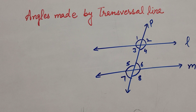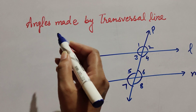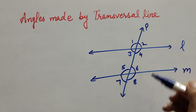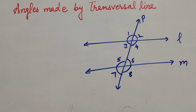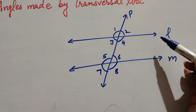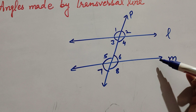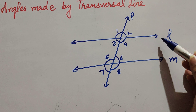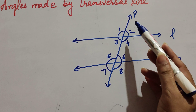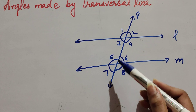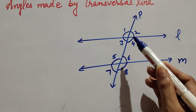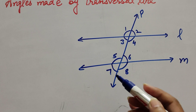This intersecting line p is called a transversal line. Now we discuss angles made by a transversal line. There is a pair of parallel lines, line l and m, and one line p intersects lines l and m at two different points.